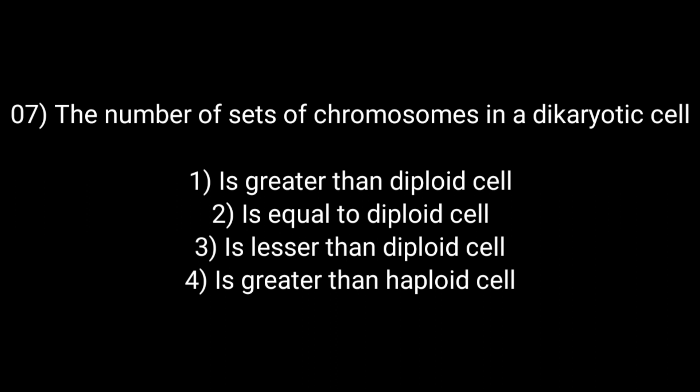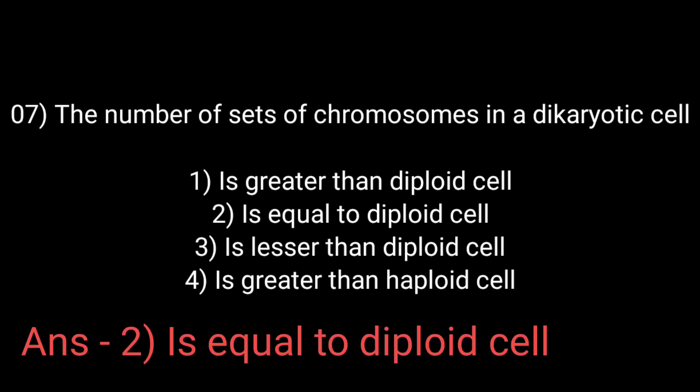The number of sets of chromosomes in a dikaryotic cell: Option 1 is greater than a diploid cell, Option 2 is equal to a diploid cell, Option 3 is lesser than a diploid cell, Option 4 is greater than a haploid cell. The answer is Option 2: equal to a diploid cell. Dikaryotic is the condition in Ascomycetes and Basidiomycetes where n+n, that is two nuclei per cell, occur.